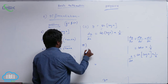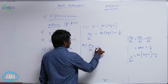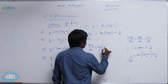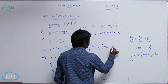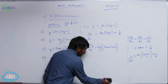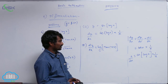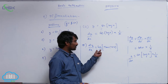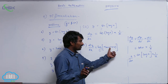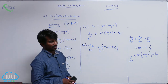The seventh problem: y is equal to log of tan of phi x. Here we have log of tan of phi x — there are three functions. Log is a function of tan x, and we have seen tan x differentiation, but we have not seen tan of phi x differentiation so far.